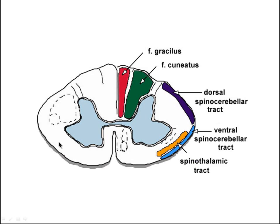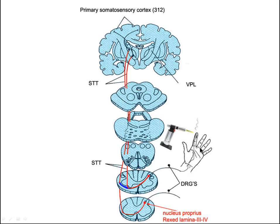To recap: a thermal insult causes receptors to fire. Signals come in through the lateral division of the dorsal root, synapse on nucleus proprius, cross the midline, and pile up in the white matter to form the spinothalamic tract proper. You can see where it sits in relationship to the medial lemniscus in the pons, and up in the midbrain between the colliculi and the medial lemniscus.